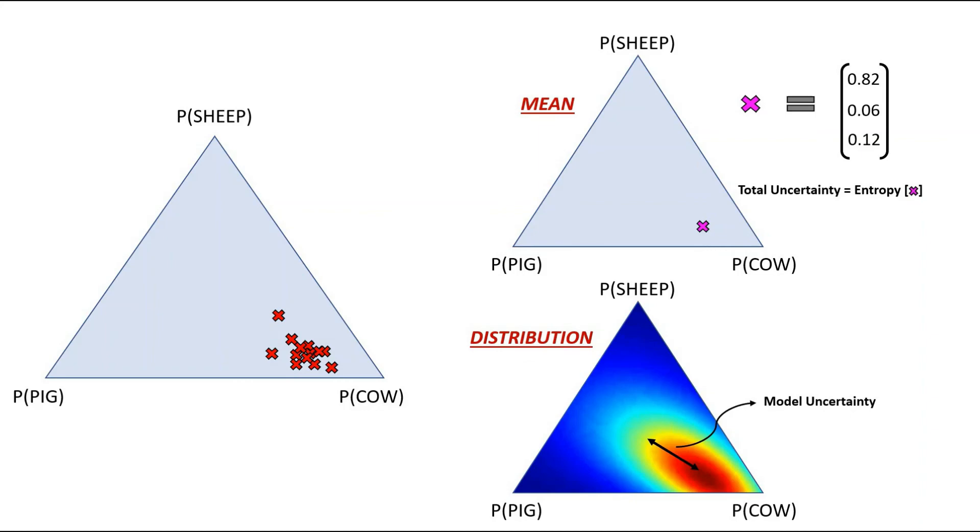We had defined the total uncertainty to be the combination of data uncertainty and model uncertainty. Therefore, we can deduce the data uncertainty as the difference between the total uncertainty and model uncertainty.